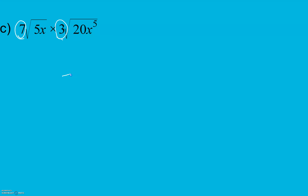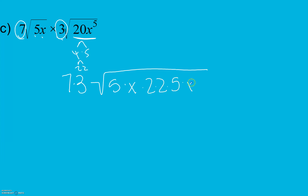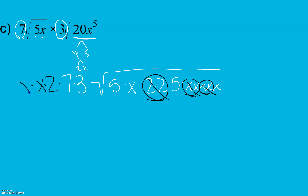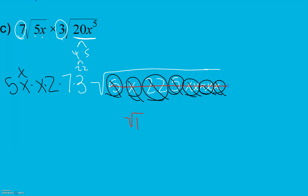In the final practice part, I have 7 and 3 outside my square roots — those stay outside as whole numbers. Inside my first square root I have a 5 and an x. Inside my second I have 20, which I'll break down as 2 times 2 times 5, and x to the 5th power. Looking for pairs: a pair of 2s, pairs of x's — three pairs of x's total — and a pair of 5s. Everything inside cancels to 1, and the square root of 1 is 1, so no radical remains. My numbers multiply to 210, and x times x times x gives x cubed. So the answer is 210x³ with no radical.